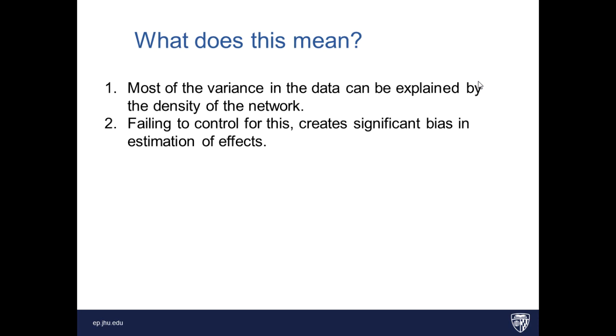Okay? Failing to control for the density of the network, it creates a significant bias in the estimation of effects. If you're saying, what's the likelihood that two people that are similar interact, well, you have to control for the fact that, like, everybody can't be connected to everybody. That is unrealistic for potential, for the type of network you're dealing with. So we're wanting to control for how much the number of edges in the network affects that probability of connection.